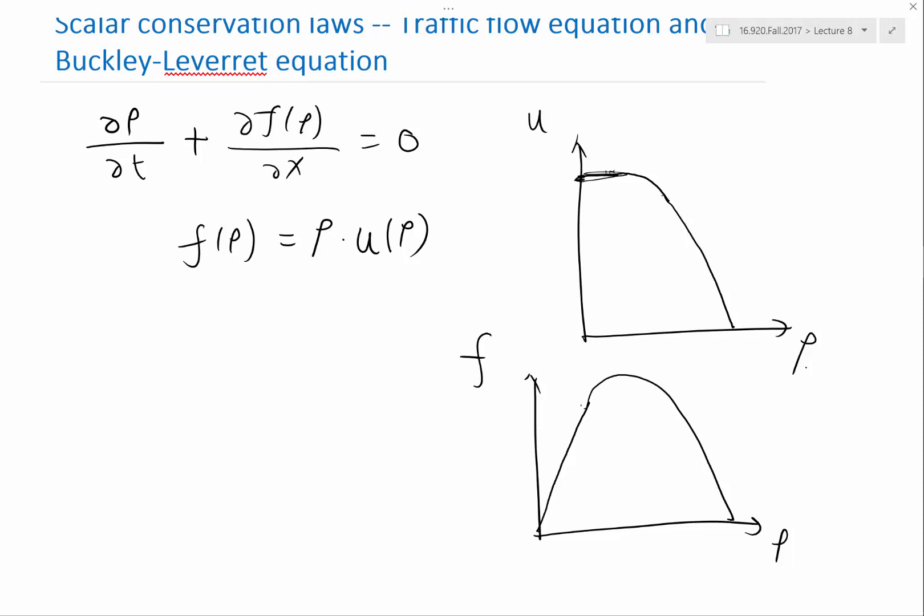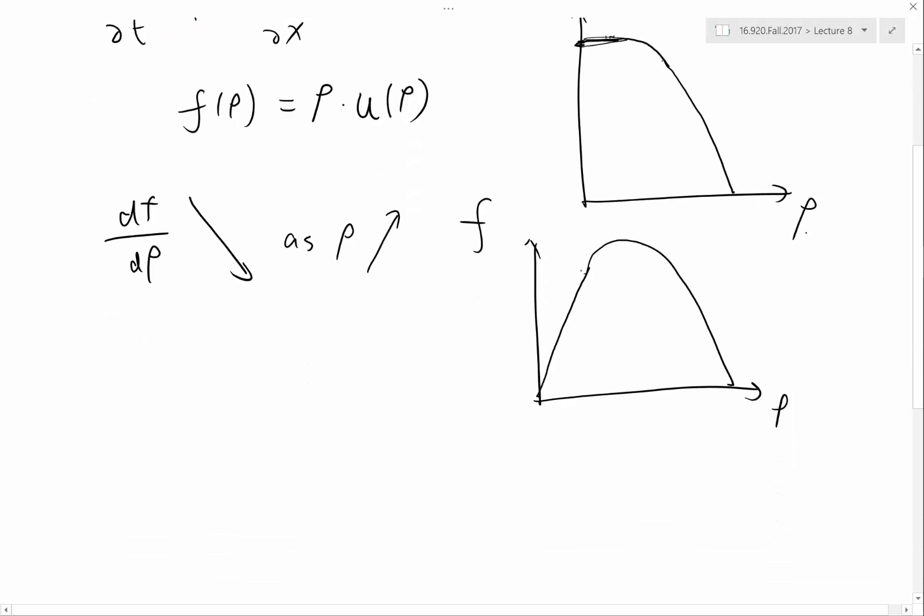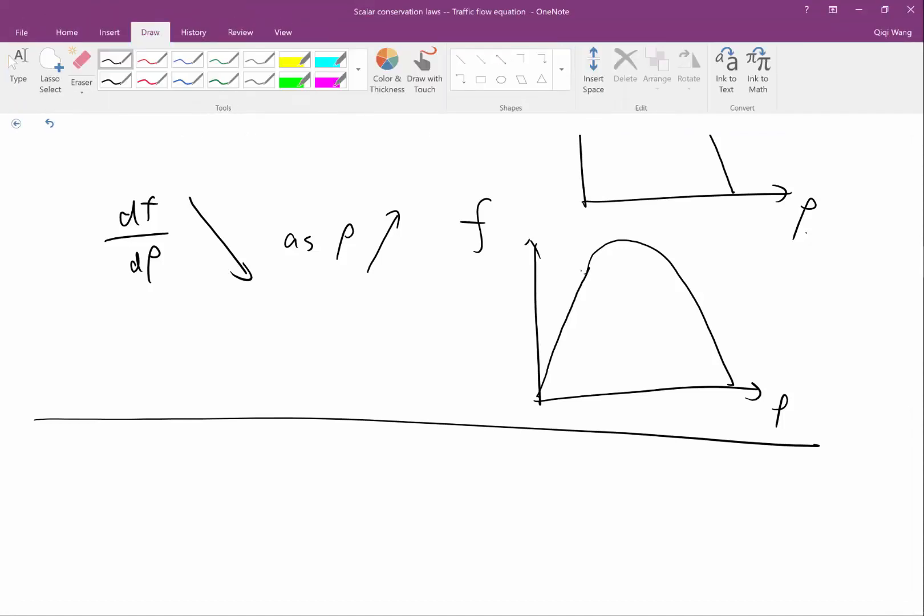That means the characteristics for larger rhos would go backward, would go towards your left. And the characteristic for smaller rhos would go towards your right. So it's opposite of Burgers equation in this case. So df/drho would decrease as rho increases. So this is one of the cases we want to consider that's different from Burgers equation.